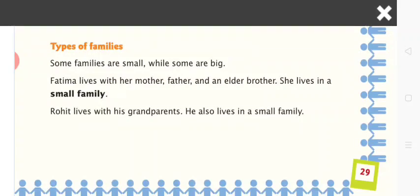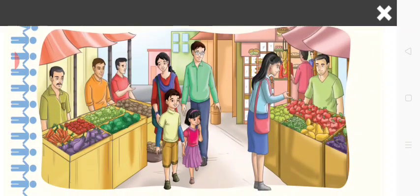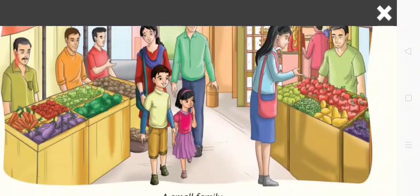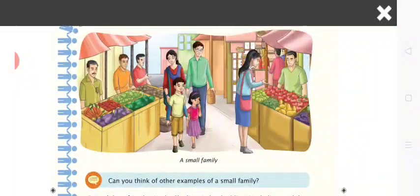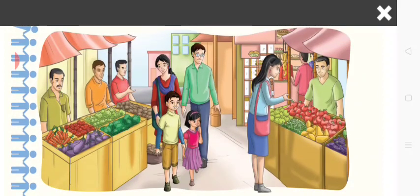Types of families. Some families are small while some are big. Fatima lives with her mother, father, and an elder brother — she lives in a small family. In this picture, a small girl wearing a pink dress named Fatima is going to the vegetable market with her parents and younger brother. A family which has only parents and their children is called a small family.